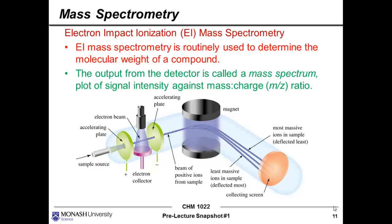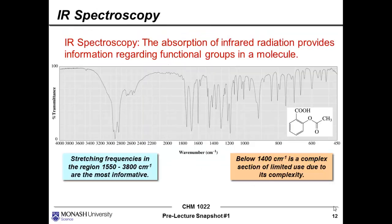Mass spectrometry is the first technique. Electron impact ionisation mass spectrometry is routinely used to determine the molecular weight of a compound — in other words, working out the molecular mass. Infrared spectroscopy is a different technique; it gives us a spectral fingerprint. Much like human beings, molecules have their own unique fingerprint — in this case a spectral fingerprint. The graph shown is known as the infrared spectrum. Each of those downward peaks represents a part of the molecule vibrating, and each peak will be in a slightly different position depending on the molecular structure, giving different molecules a slightly different spectrum.